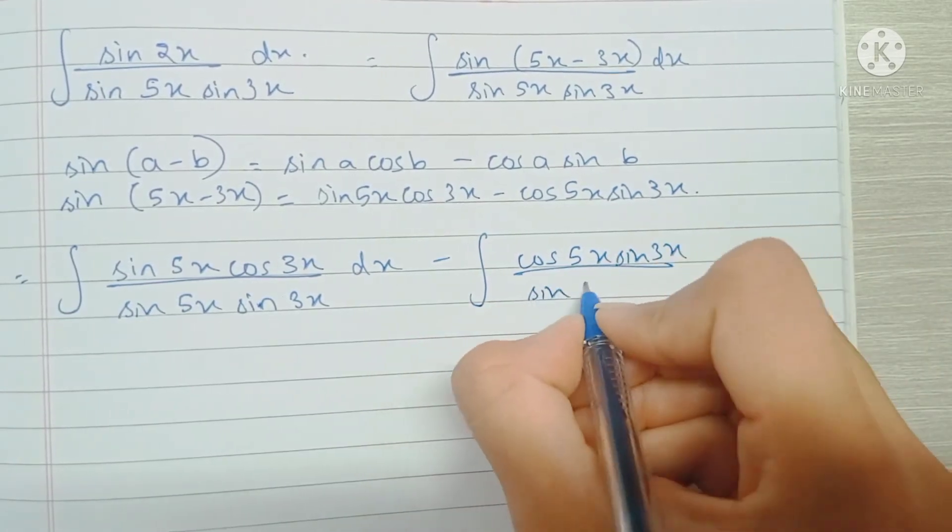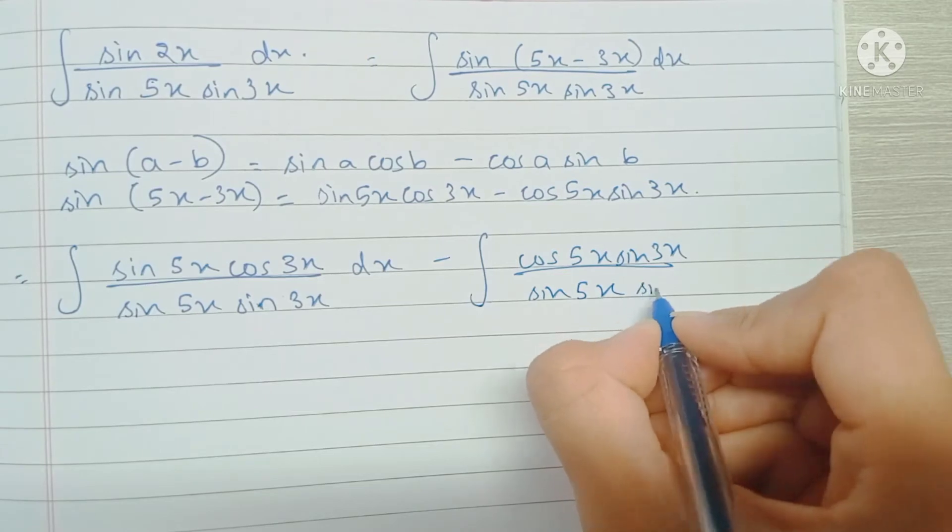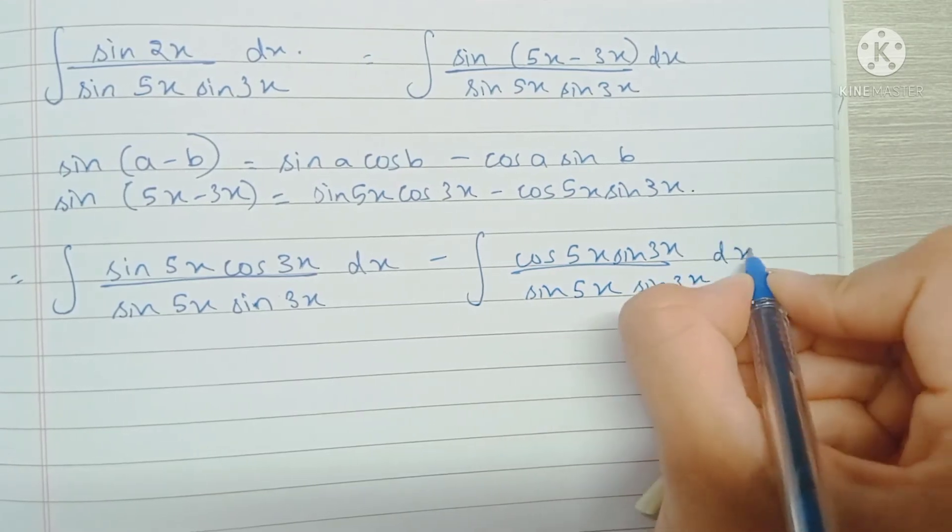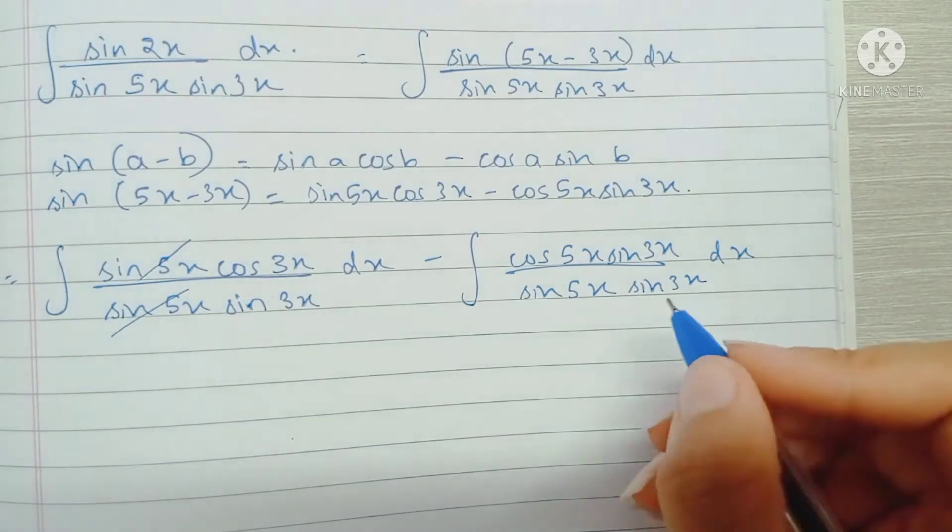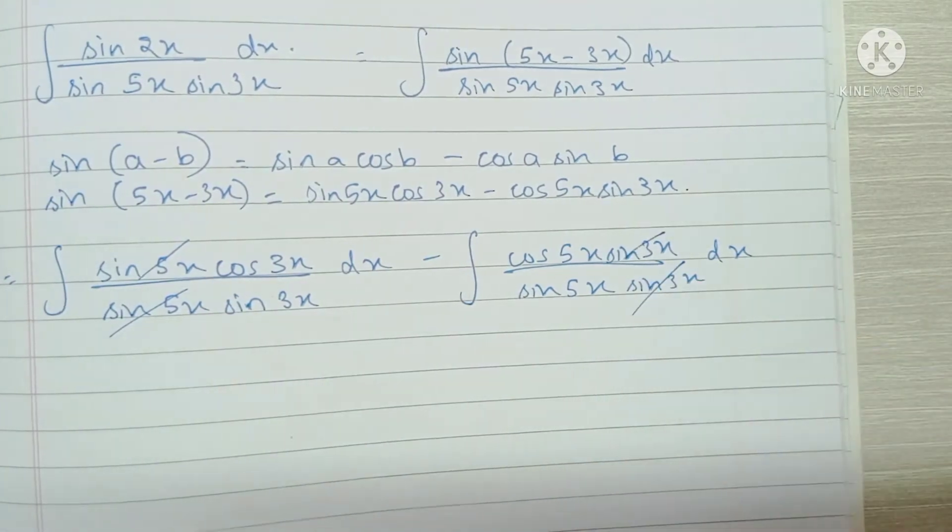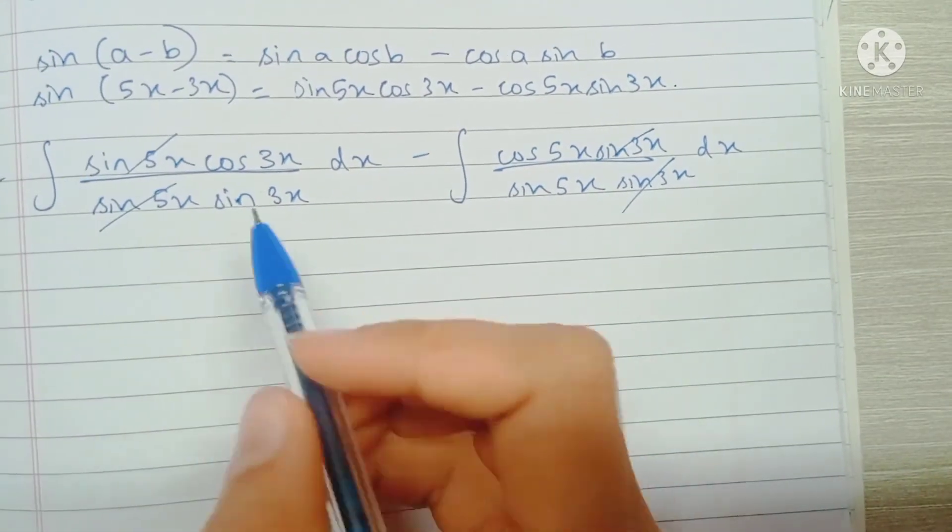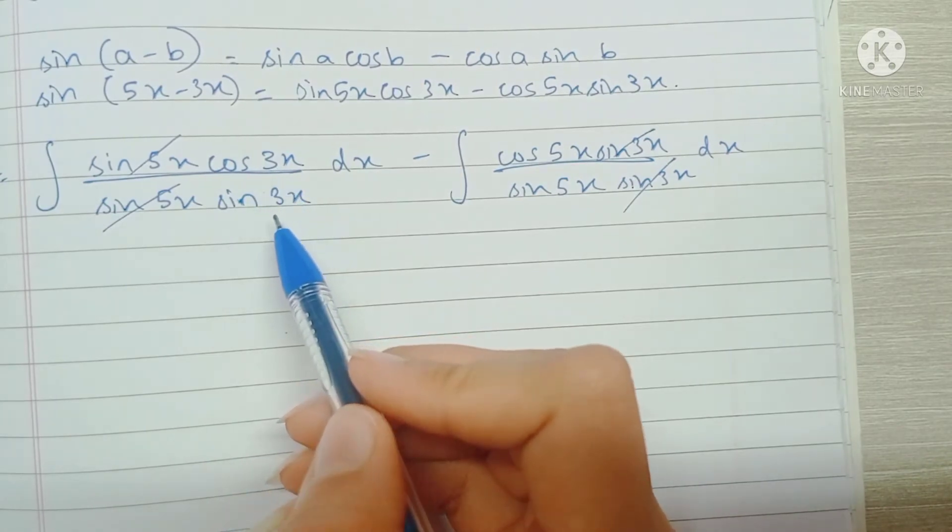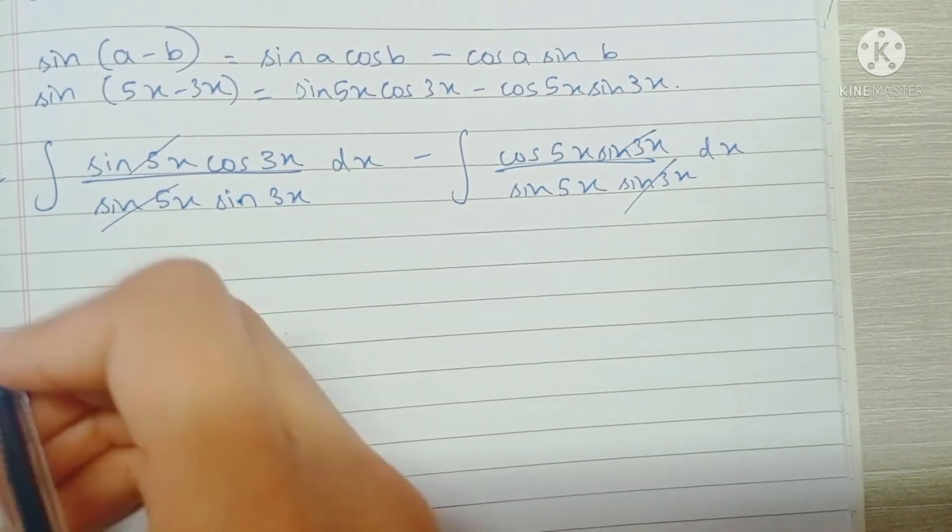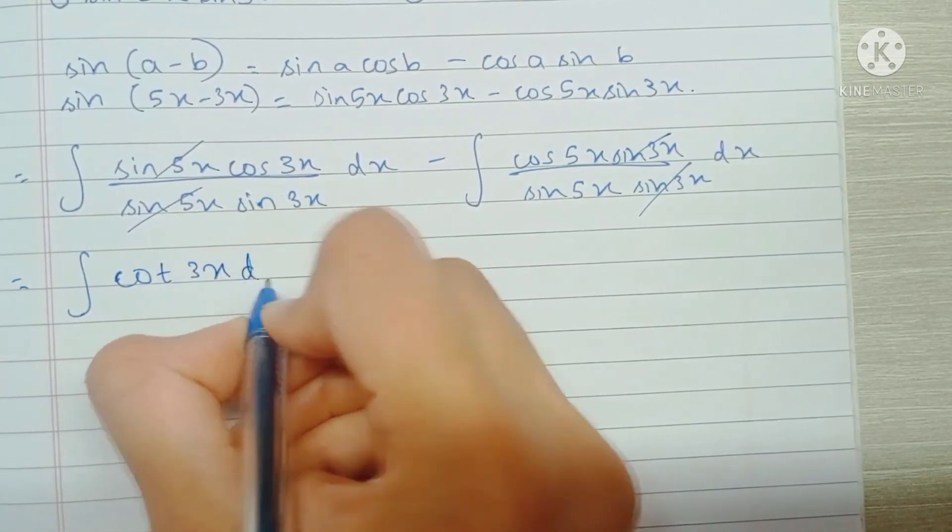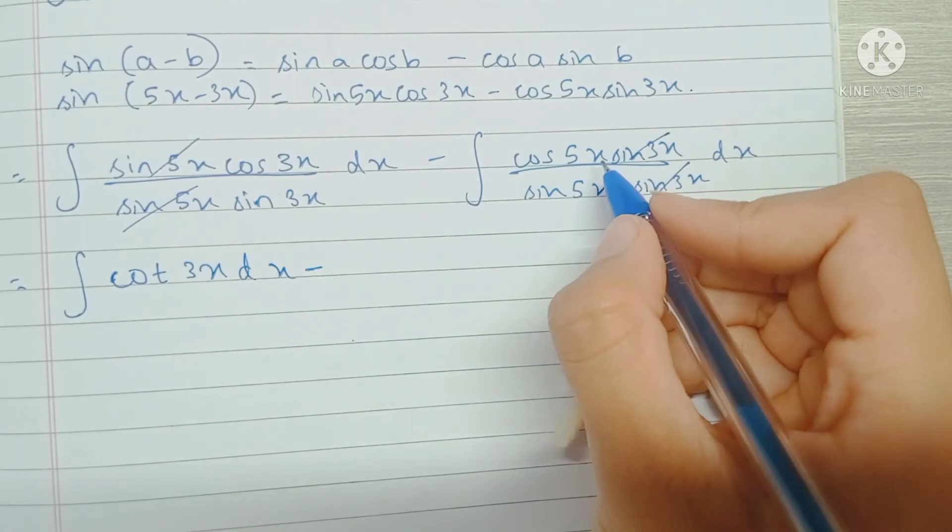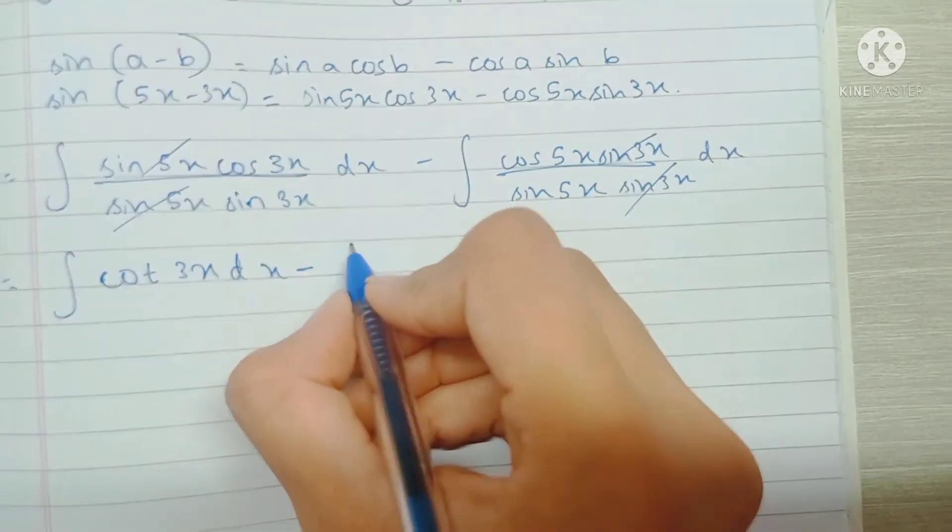As you can see, in the first integral sine 5x gets cancelled, and in the second integral sine 3x gets cancelled. In the first integral we have cos 3x upon sine 3x, which can be written as cot 3x, and in the second integral we have cos 5x upon sine 5x, which can be written as cot 5x.